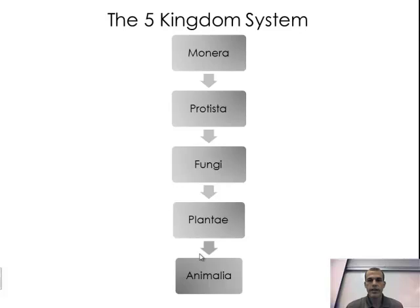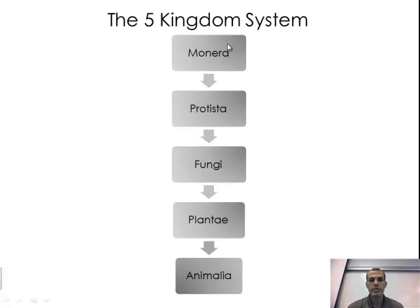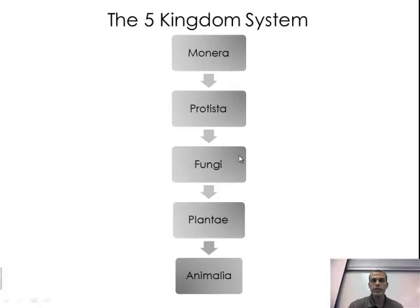Continuing on, we're going to look at the five kingdom system, which many of you have probably been introduced to before. We have Monera, Protista, Fungi, Plantae, and Animalia. Some systems you might see actually list six kingdoms — that's because some textbooks break the Monera into two separate kingdoms: Archaebacteria and Eubacteria, since the two types of bacteria are so different. For our purposes, we'll keep them together and go through each one, looking at some common characteristics and giving you a picture of what each one looks like.